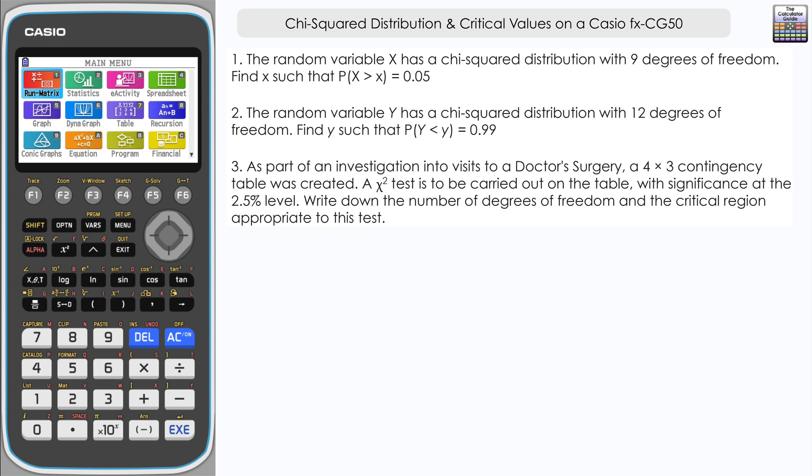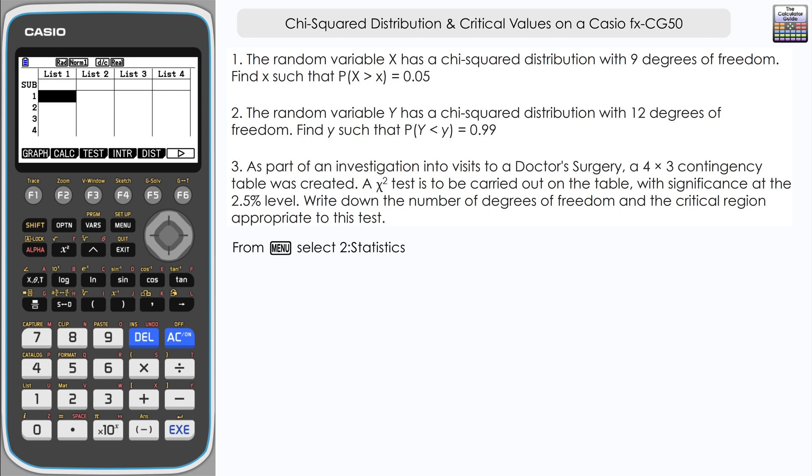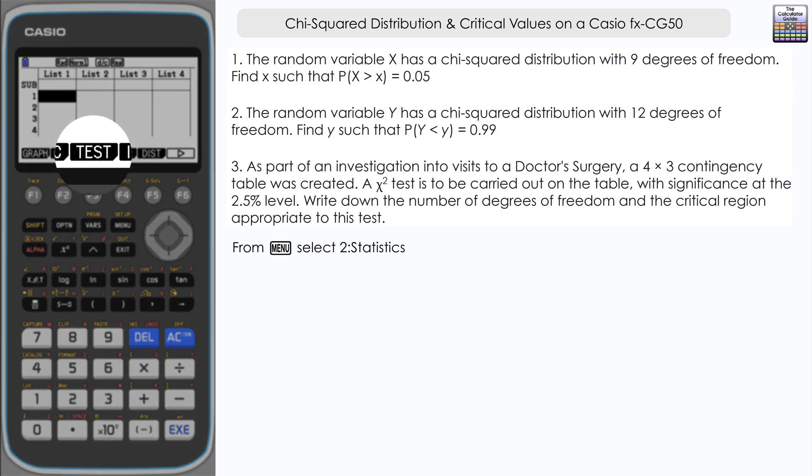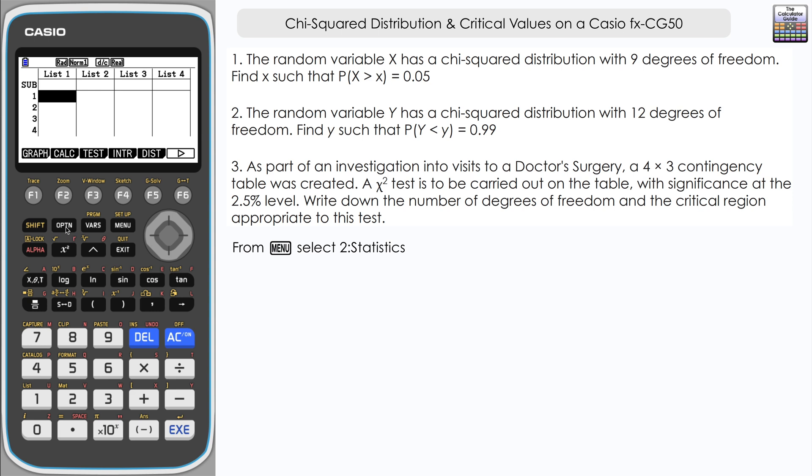Okay, so let's use the calculator to answer this question. We need to go to statistics. In these particular examples, we're not going to be performing a test, although you may have done a chi-squared test and maybe want the critical value from that beforehand. So we don't actually go to test.